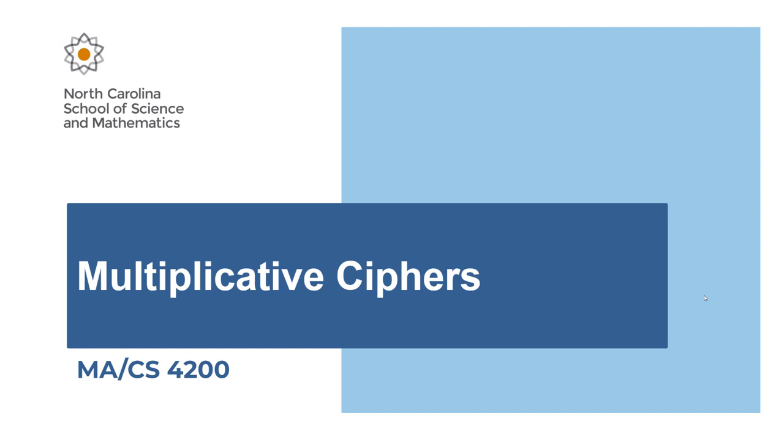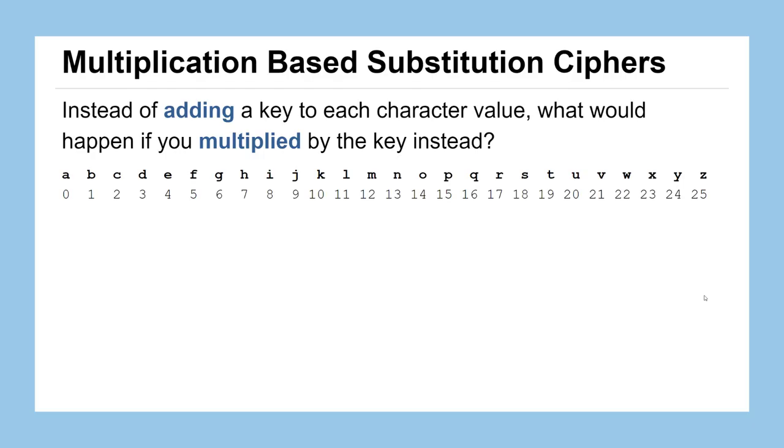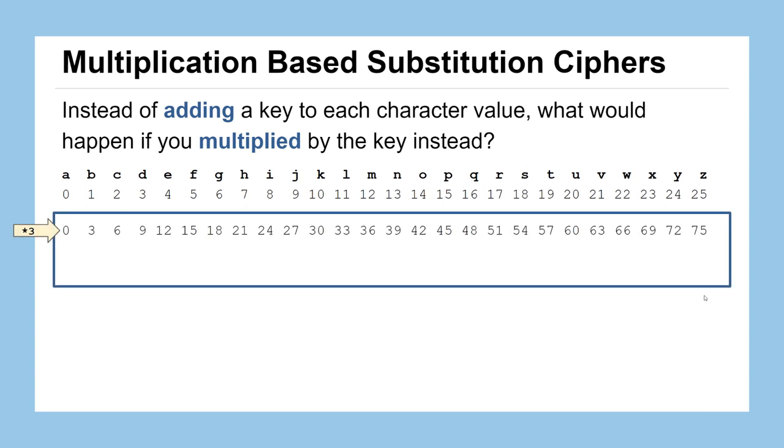In this lesson, we'll be talking about another way to implement a monoalphabetic substitution cipher that doesn't rely on addition like the Caesar cipher. Instead, we'll be looking at what we call multiplicative ciphers. So instead of using the Caesar cipher where we added a key to each character value, let's look at what would happen if we instead multiplied by a key value.